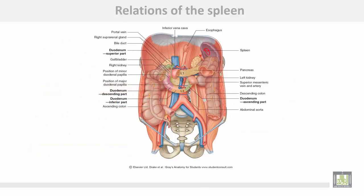This shows the normal position of the spleen and its relations: the left kidney, the stomach, the left colic flexure, and the tail of the pancreas.